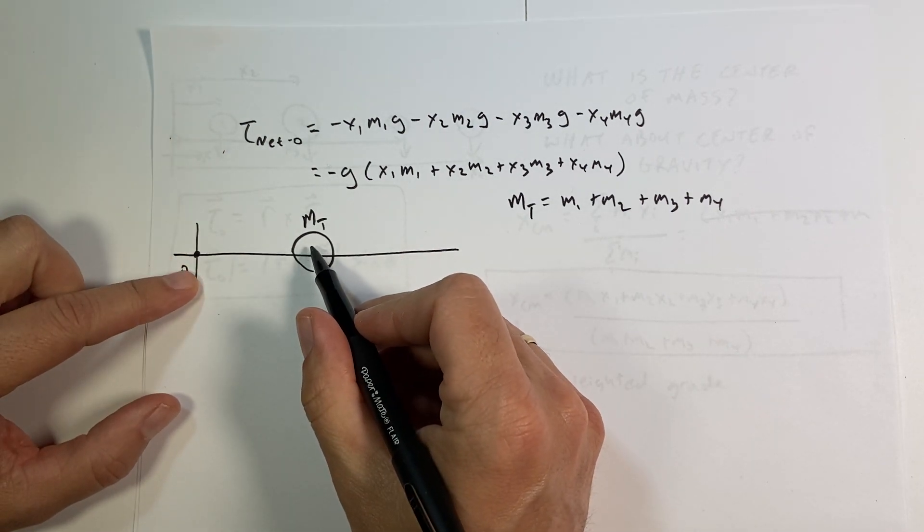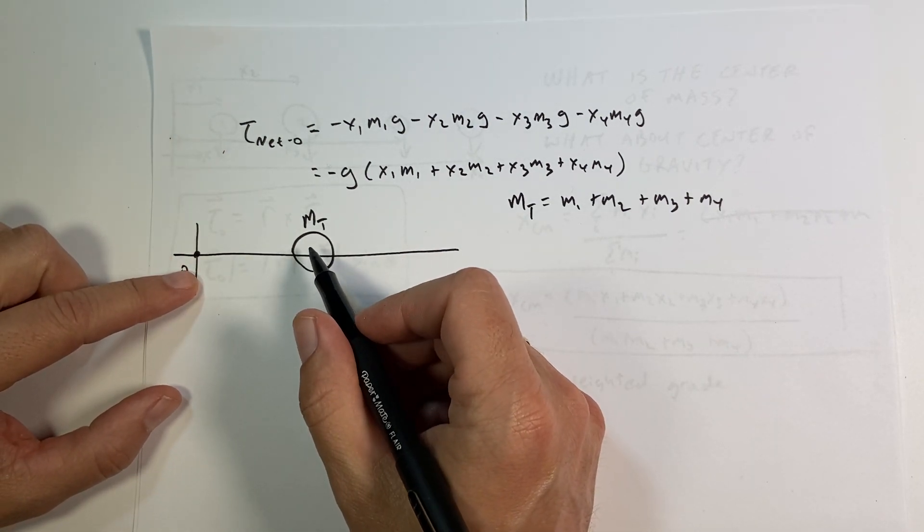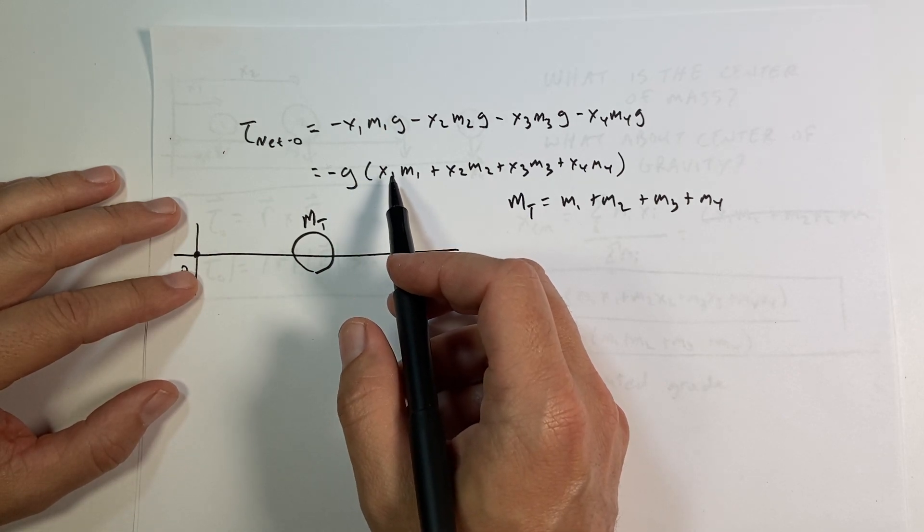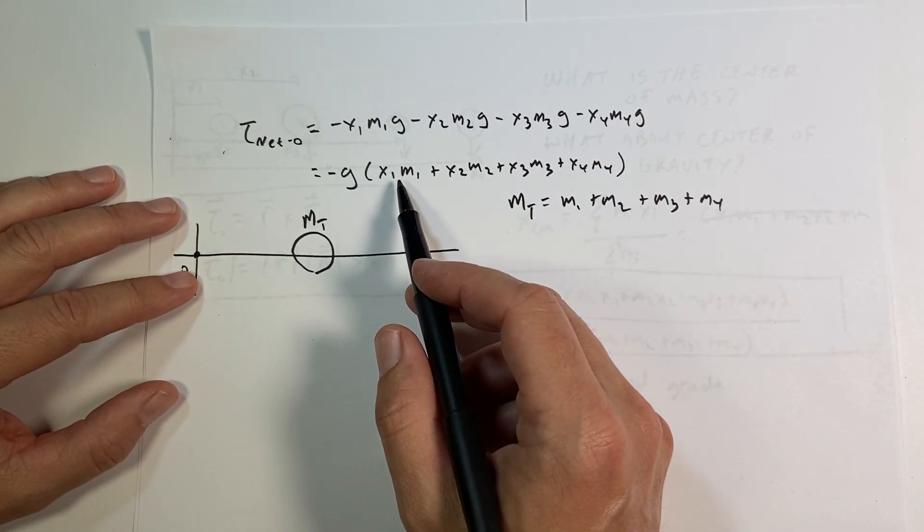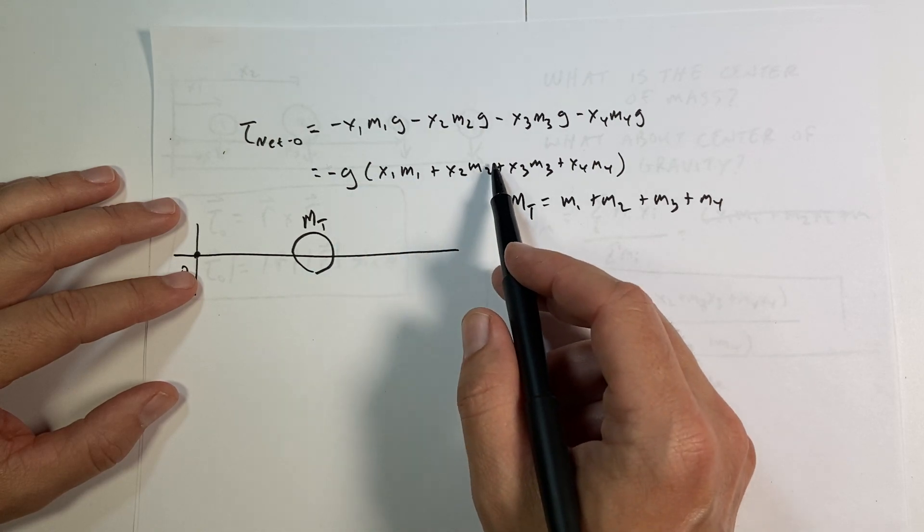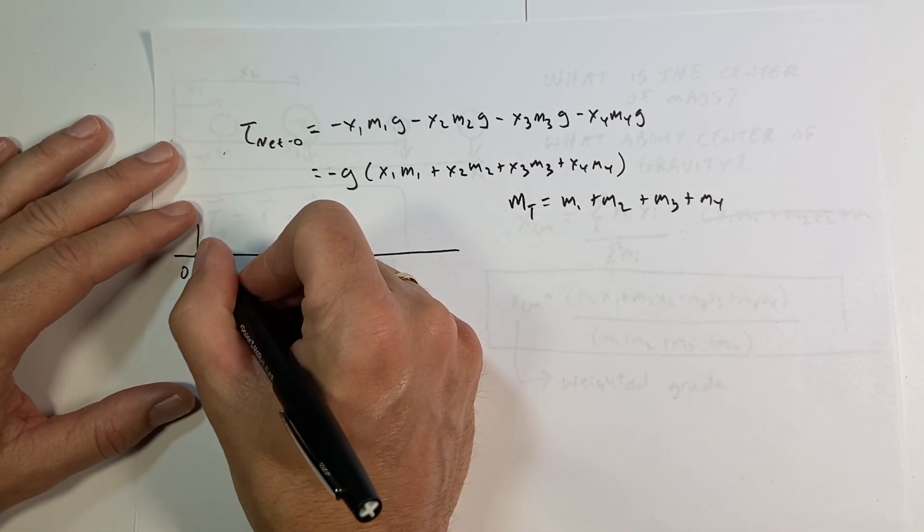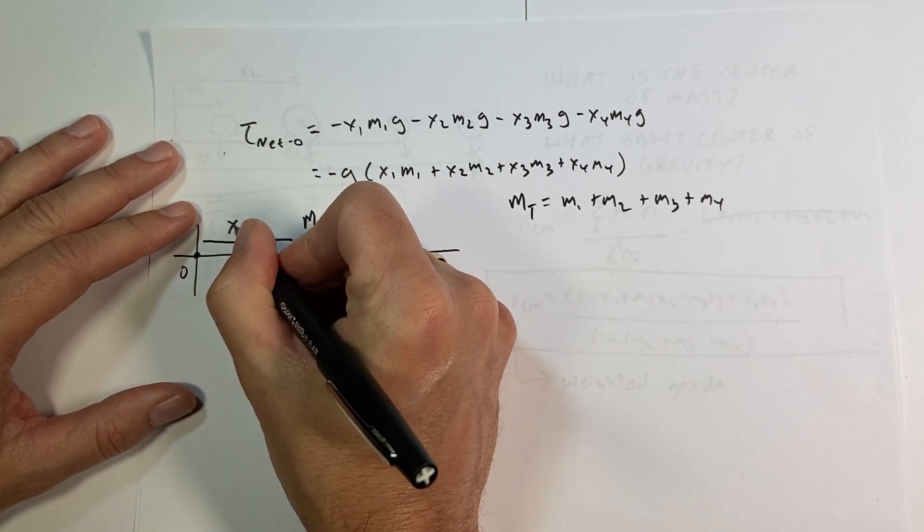Now, where would I put that mass such that it has the exact same torque as the individual torques added up? So I want to have one value that has the same position here. So let's call this, as you can see, x center mass.